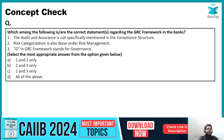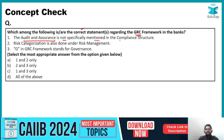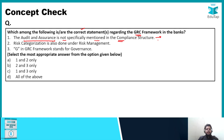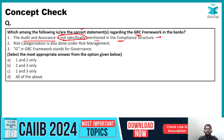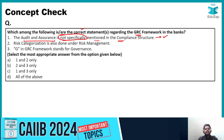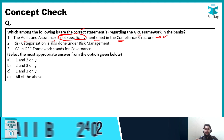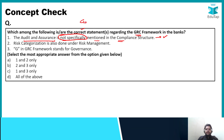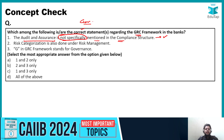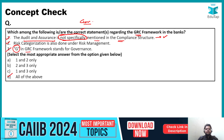Now let's look at a question based on this. Which among the following are correct statements regarding the GRC framework in banks? Statement one: audit and assurance is not specifically mentioned in the compliance structure — this is correct, as it falls under governance. Statement two: risk categorization is also done under risk management — this is absolutely true. Statement three: G in GRC framework stands for governance — this is also right. So all of the above, option D, will be the correct answer.